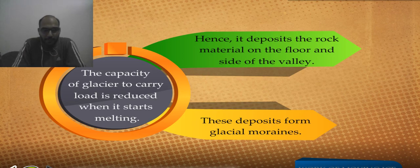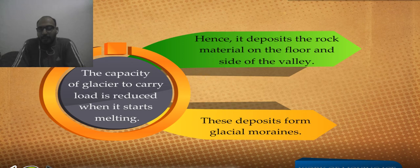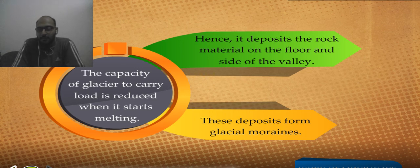We will continue from here tomorrow. The capacity of glaciers to carry load is reduced when they start melting, and the rock materials deposited are called glacial moraines. We will discuss that in detail tomorrow.